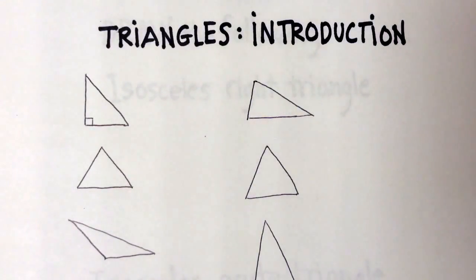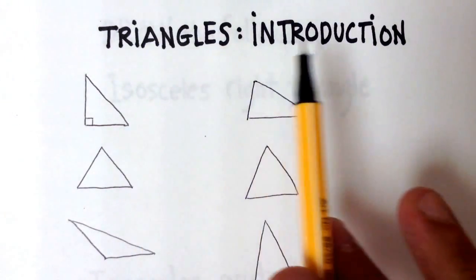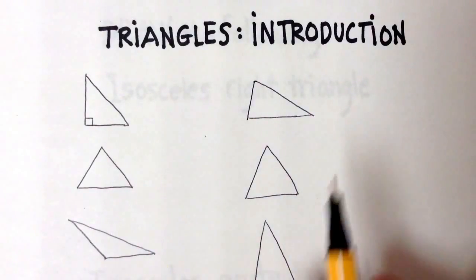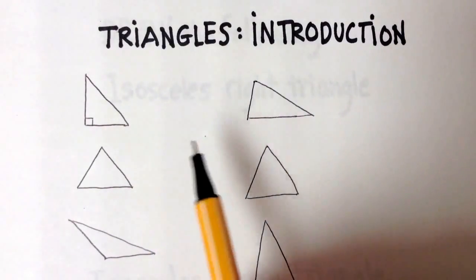So in this video, we're going to introduce six types of triangles. We're going to name them and talk about the characteristics of each. So let's get started.